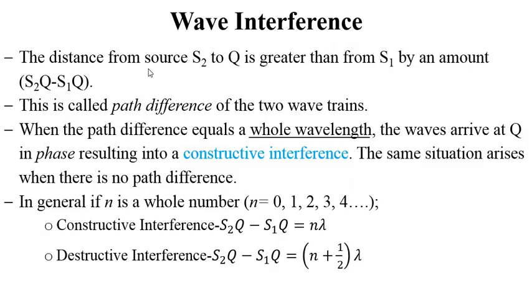Continuing on this concept, we need to think of the distance from source to that point of observation. Let's say S2 to Q from our diagram is greater than S1 to Q by the amount this difference. That is, this distance S2 to Q and S1 to Q. The difference in this measurement is what we call path difference.